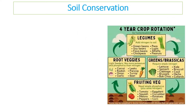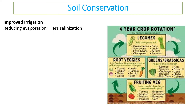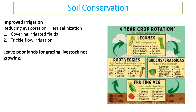We can also improve irrigation methods. Instead of spray irrigation where water is sprayed randomly, we can use different methods to reduce evaporation and reduce salinization. We can cover the irrigated field so that evaporated water is caught and drips back in, reducing evaporation in the first place. Alternatively, we can use trickle flow irrigation, where pipes with tiny holes allow water to trickle rather than be sprayed, delivering water much closer to the soil. We can also leave poor lands and accept they are not meant for growing crops, maintaining basic land quality and using them for cattle grazing instead.